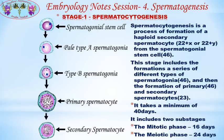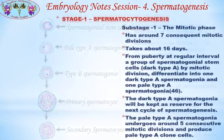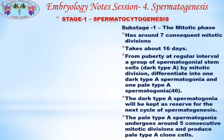The first substage is the mitotic phase. It takes around 16 days. The second substage is the meiotic phase, which takes around 24 days. The mitotic phase involves around 7 consecutive mitotic divisions.